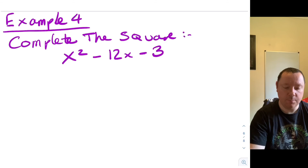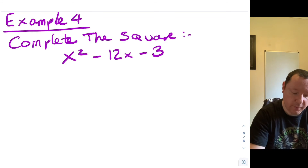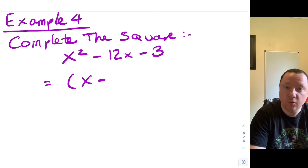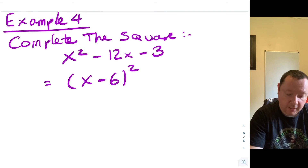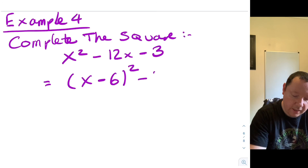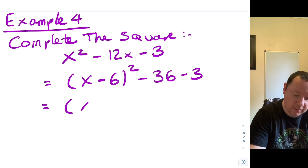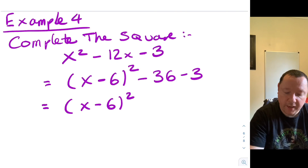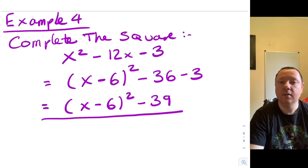One final example. Example four says complete the square: x squared minus 12x minus 3. You should be getting the idea of the method now. We do x minus 6 squared, because half of 12 is 6, keeping the same sign. We square the 6: 6 times 6 is 36, so we immediately take away 36. But we've still got minus 3 to go, so the final answer is x minus 6, all squared, minus 36 take away 3 — just be careful — that is minus 39, and there's our final answer, nice and simple.